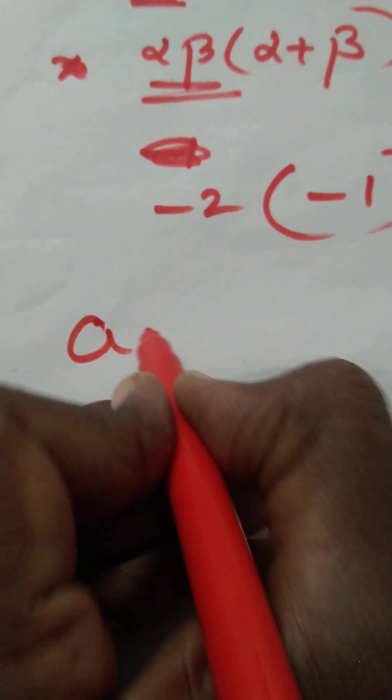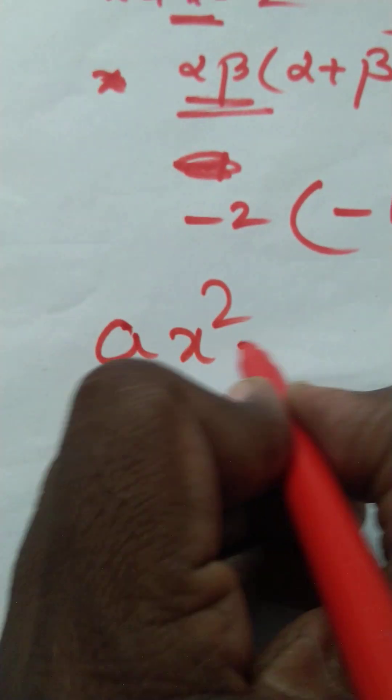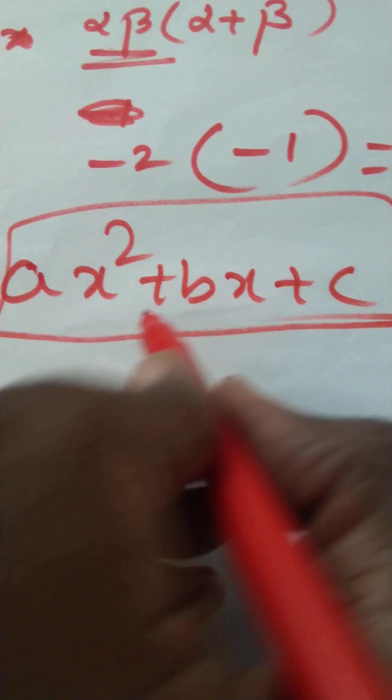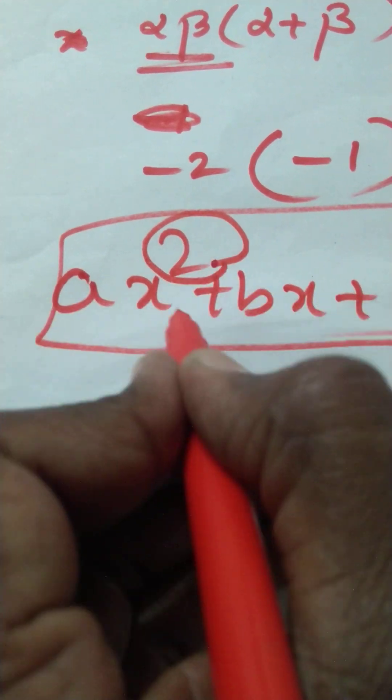I am explaining again: ax² + bx + c is the quadratic polynomial. The degree is 2. What is the degree of x? x is the constant here.